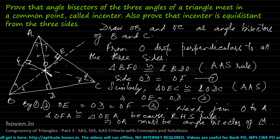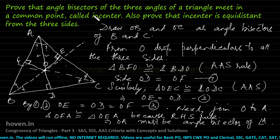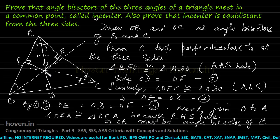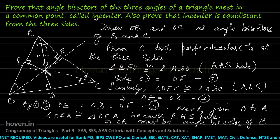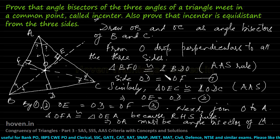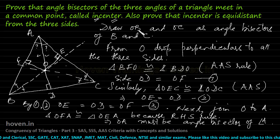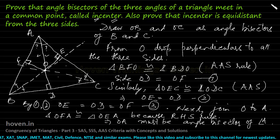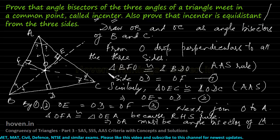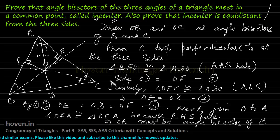Now, triangle OFA is congruent to triangle OEA because this is 90, this is 90, hypotenuse OA is common, and OF has already been proved equal to OE. By the right angle, hypotenuse and side rule, these two are congruent, and if they are congruent then this angle must equal that angle — which implies OA must be the angle bisector of angle A. This immediately proves that all three angle bisectors meet at point O, and therefore this point O is called the incenter, equidistant from all three sides.